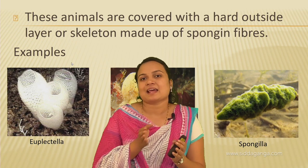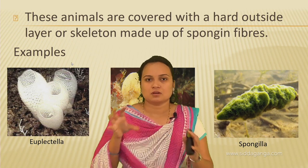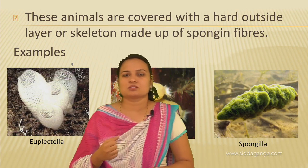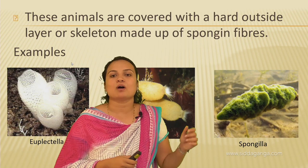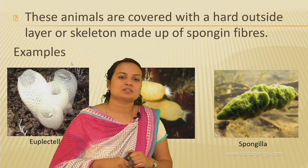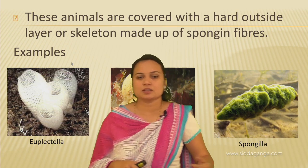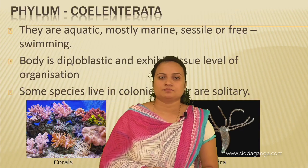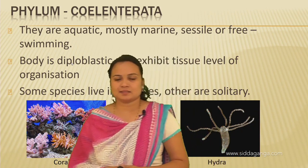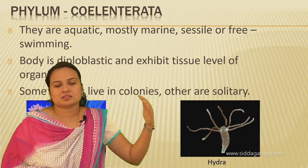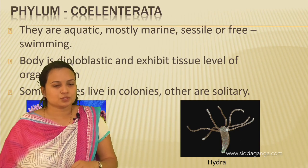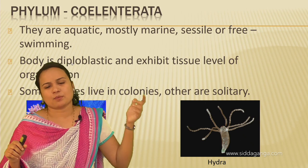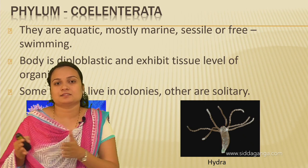Some Cnidarian species are free swimming and some are not. Examples of Cnidaria include Aurelia — the moon jellyfish — sea anemone, corals, and hydra. These organisms look different from one another. So the examples of Cnidaria are hydra, corals, Aurelia, and sea anemone.